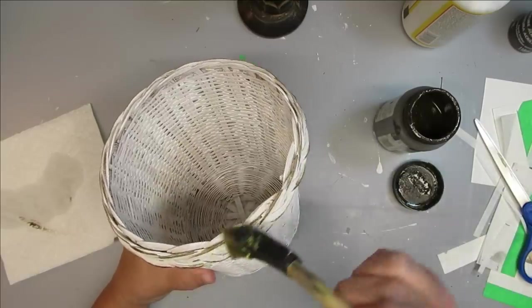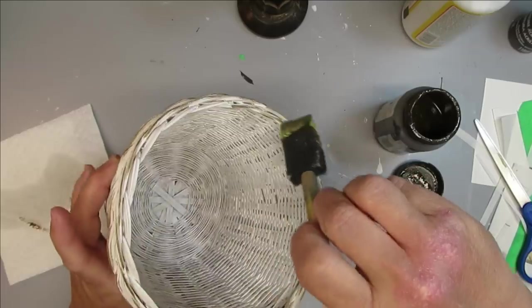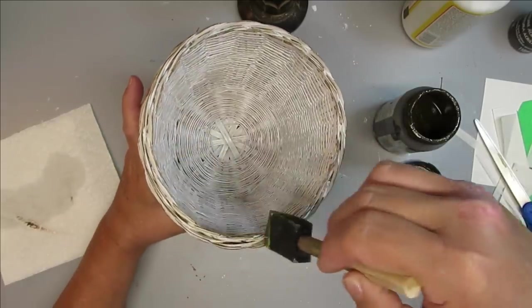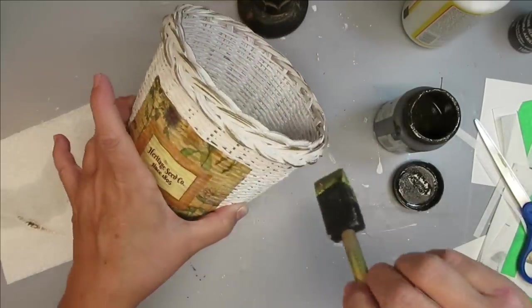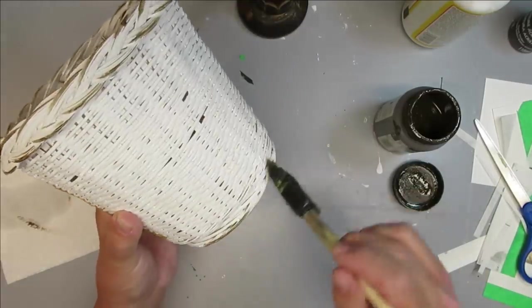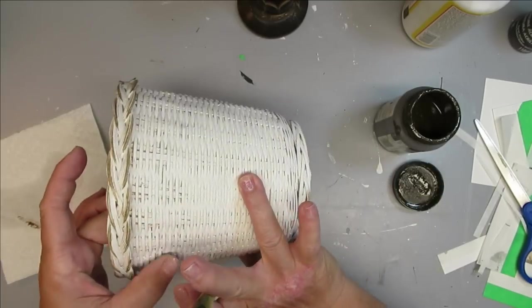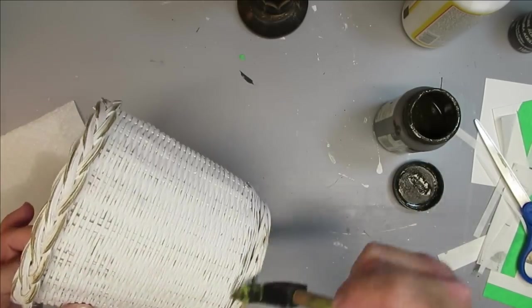I love putting things on candlesticks and spindles and if you've been with me for a while you know that I do a lot of that. I just think it elevates a piece and makes it look so pretty. So the candlestick that I'm going to be using is wood and it's dark brown and I don't want to paint it.